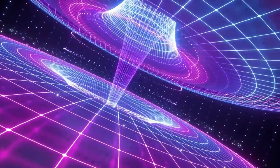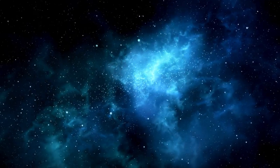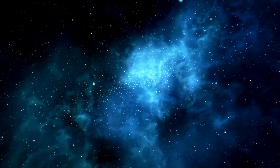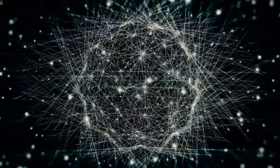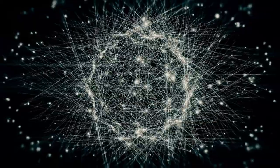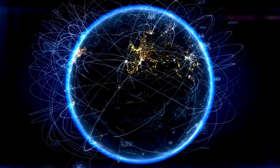Dark matter doesn't just lurk in the void. It weaves the fabric of the universe itself. It forms a colossal cosmic web, a network of invisible filaments that shape the distribution of galaxies. These dark matter highways guide the growth of galaxies and clusters over billions of years.